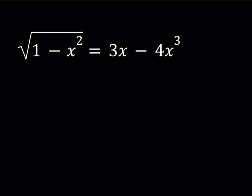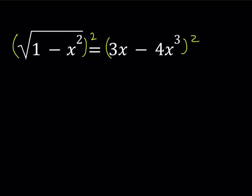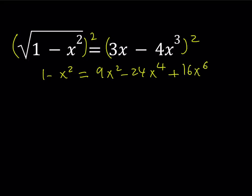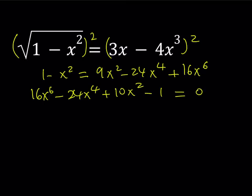As with pretty much every radical equation, if you square both sides you get rid of the radical and you get 1 minus x squared equals 9x squared minus 24x to the 4th power plus 16x to the 6th power. If you put everything on the same side, you get 16x to the 6th minus 24x to the 4th plus 10x squared minus 1 equals 0. This equation has degree 6 and we don't have any formula for anything quintic and above, so this is not a very good way to solve this problem. We're going to use a different approach.